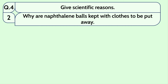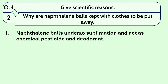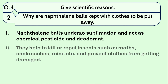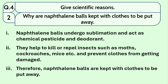Question number 2: why are naphthalene balls kept with clothes to be put away? Naphthalene balls undergo sublimation and act as a chemical pesticide and deodorant. They help to kill or repel insects such as moths, cockroaches, and mice, and prevent clothes from getting damaged. Naphthalene balls are solid, but sublimation means they directly convert into gas and with time disappear. Therefore, naphthalene balls are kept with clothes to be put away.